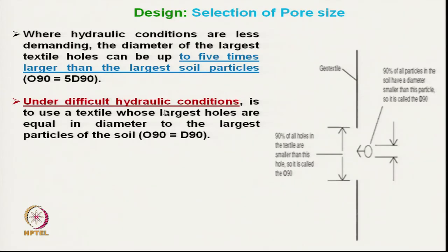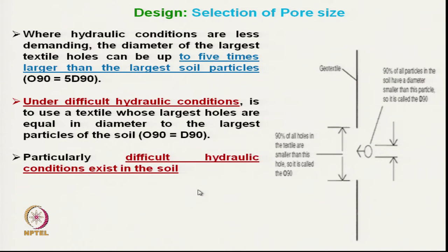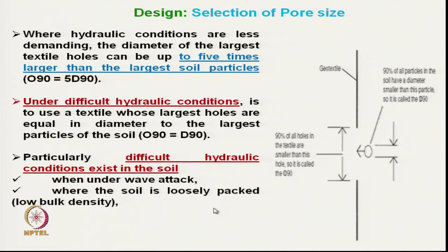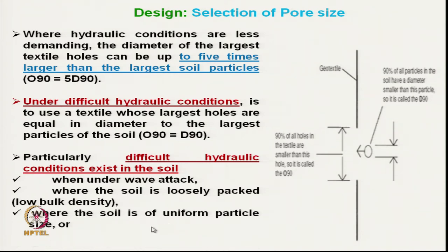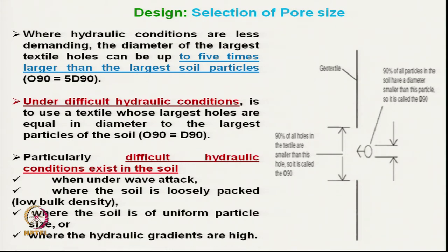For harsh conditions, we select a lower pore size: O90 ≈ D90. Difficult hydraulic conditions requiring O90 = D90 include: underwater wave action, loosely packed soil where individual particles can come out, soil of uniform particle size (which creates less cohesion), and conditions where the hydraulic gradient is high.